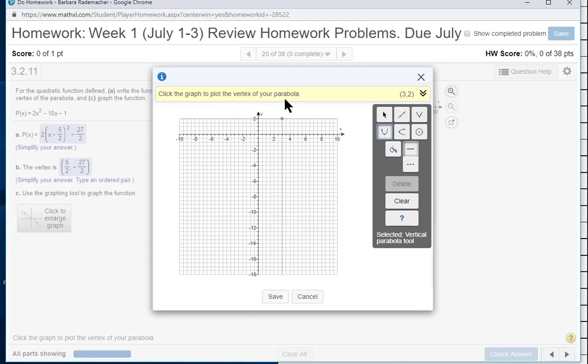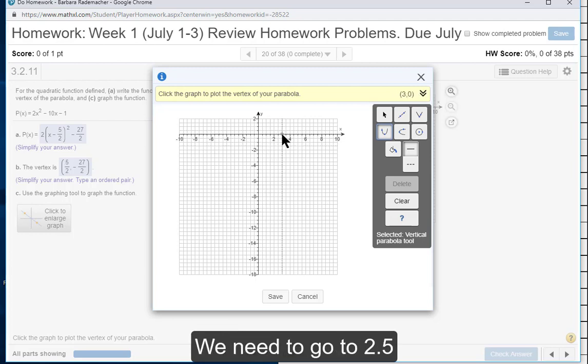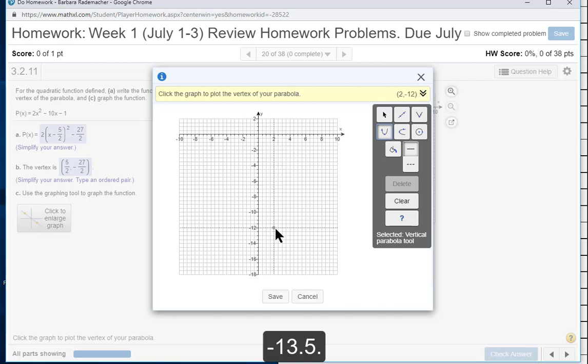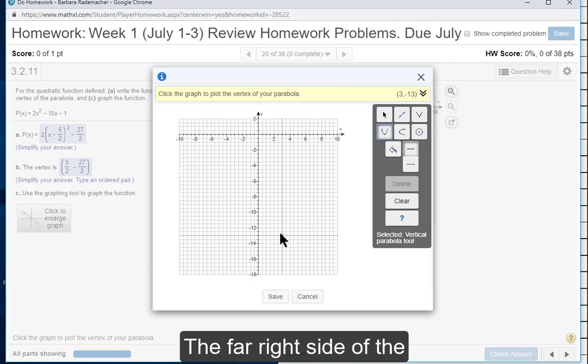So you're going to drag that dot down to where the vertex is. It's going to be located at 2.5 comma negative 13.5. Now right now I'm on three. I haven't quite realized that that's not two and a half. But I'm about to realize it. There, that's good.